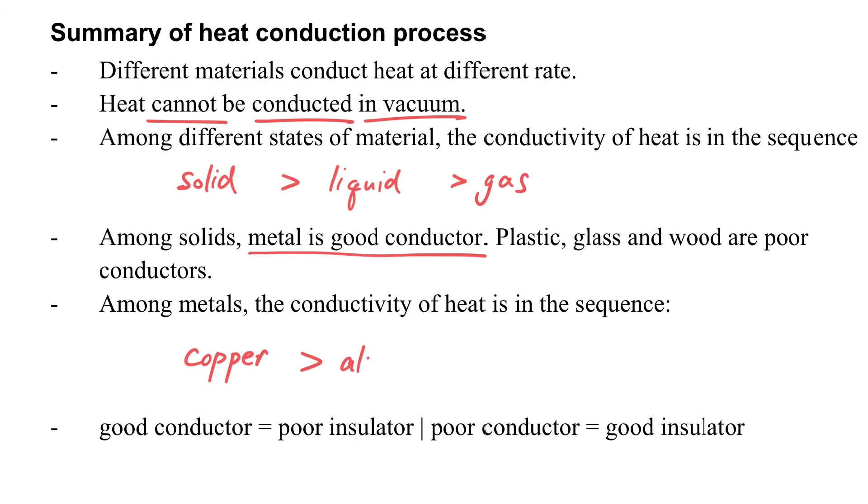For the conductivity of heat of different metals, copper is better than aluminum, and then better than the iron. And you should note that a good conductor is also a poor insulator, and a good insulator is also a poor conductor.